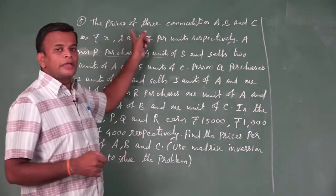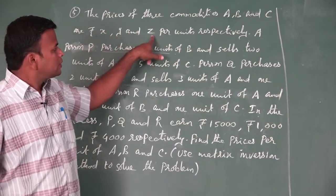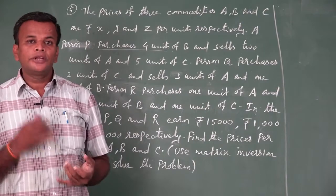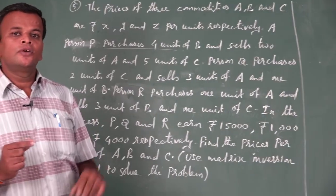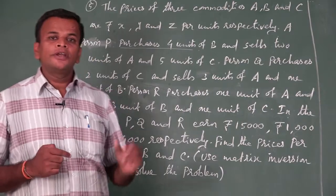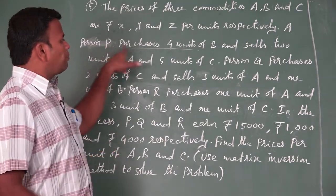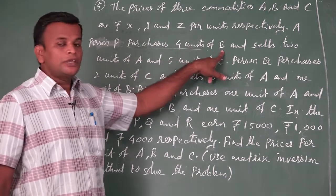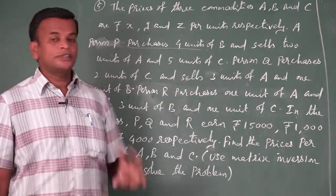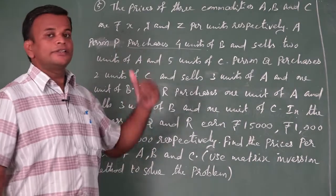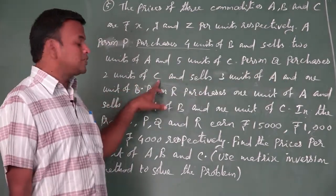The problem is: the prices of 3 commodities A, B and C are rupees X, Y and Z per unit respectively. That is, 1 unit of A is rupees X, 1 unit of B is rupees Y and 1 unit of C is rupees Z. A person P purchases 4 units of B and sells 2 units of A and 5 units of C.